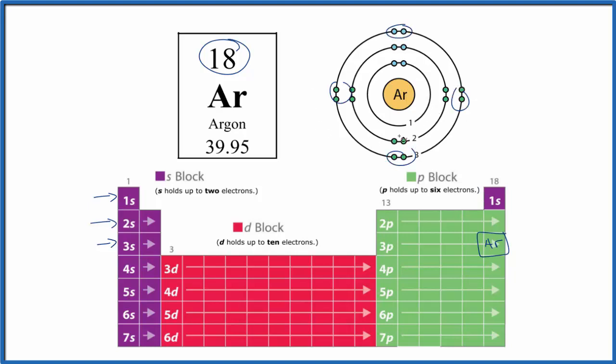This is the Bohr diagram, the Bohr model for argon. It shows us the structure of the argon atom. Argon is considered a noble gas, and that's because the outer shell, the highest energy level here, is full with eight valence electrons.